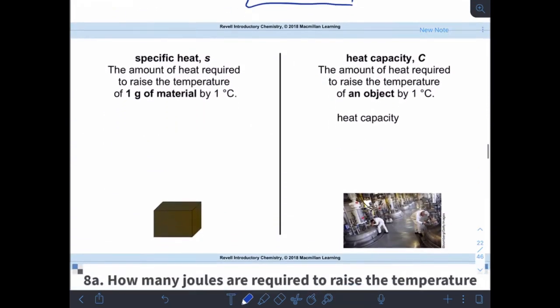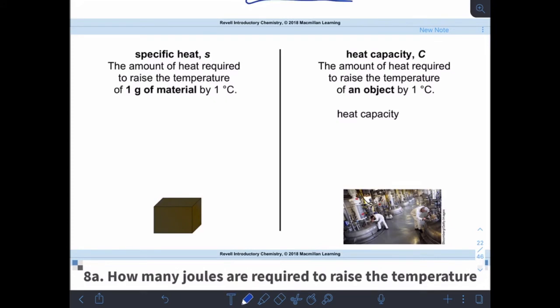All right, let's take a look at some differences between specific heat and heat capacity. So specific heat is the amount of heat required to raise the temperature of one gram of material. Okay, heat capacity, on the other hand, is the heat required to raise the temperature of an object. Okay, so I can talk about like a kettle of boiling water as an object, or I can talk about just the water as a substance. Okay, so we can talk about the amount of heat required to change the temperature in various ways. Most of the time we're going to be dealing with specific heat.